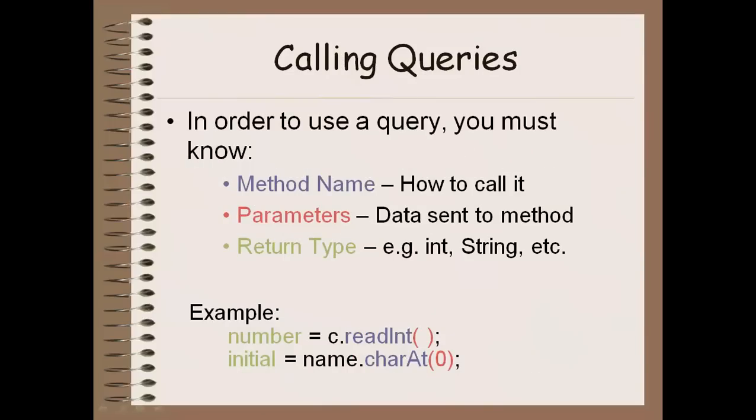So how do you use a query? Well, in order to use a query, you have to know three things about it. First, you need to know the name of the method, so that you can call it. Secondly, you have to know what parameters are required by the method, so you can give the proper arguments, or the data being sent to the method for it to run.